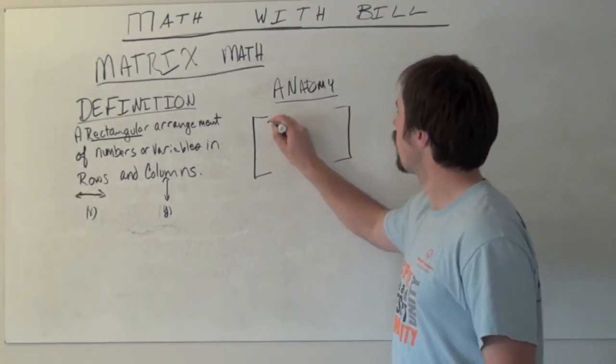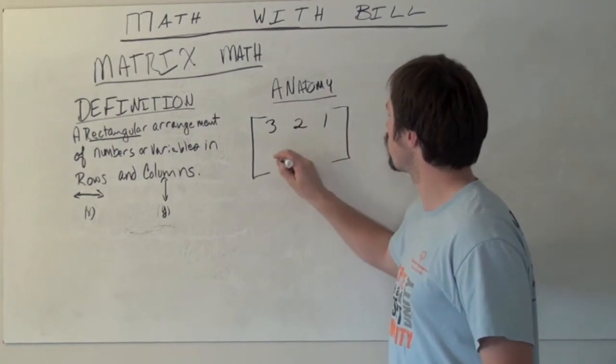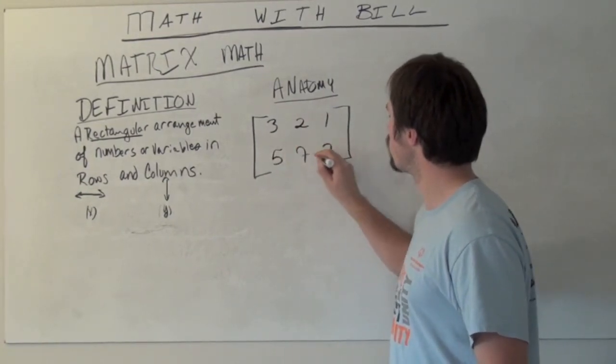So I'm just going to make one up here. I'm going to call it 3, 2, 1, 5, 7, 2.